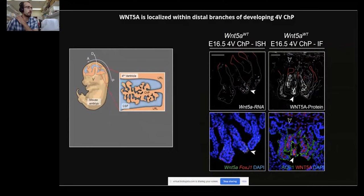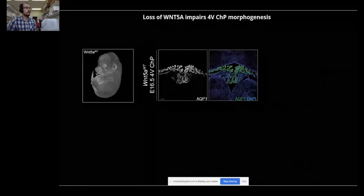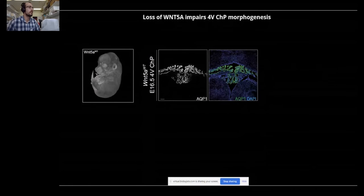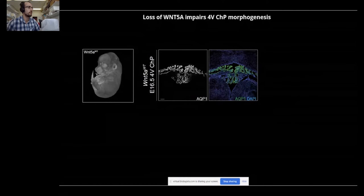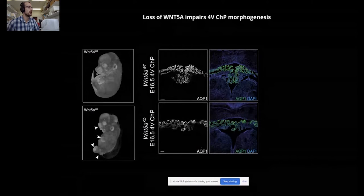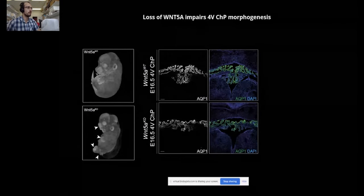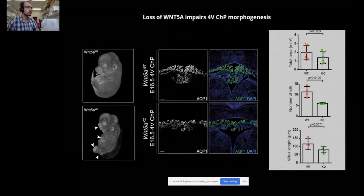This points to the possible role of epithelial WNT5A as a molecular factor underlying the branching of the tissue. To test this hypothesis, we decided to investigate the impact of WNT5A ablation on the fourth ventricle choroid plexus. Confirming our initial assumptions, we noticed that the loss of WNT5A leads to impaired morphogenesis of the tissue, demonstrated by reduction in the overall size of the tissue as well as its intricate branching architecture.